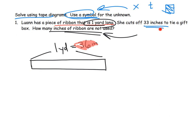And so then she cuts off 33 inches. So the reason I wanted inches is because I knew she was going to be cutting off 33 inches, and now we're talking about the same units, 36 inches, 33 inches. So I'm going to chop off all of this and this is 33 inches to tie a gift box. And so that's gone. Now the question is how many inches of ribbon are not used? So that's this part right here. And I'm going to use the letter N for not used.